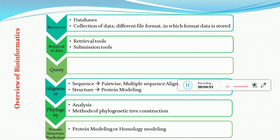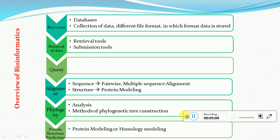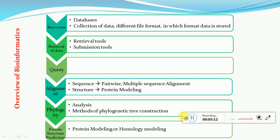Next, based on retrieval or submission, we can generate a query — a sequence on which we can apply multiple processes. For example, if we get a query in the form of a sequence, we can do alignment. Alignment is basically checking how much similarity exists between an unknown sequence and known sequences already present in databases. Sequence alignment can be done in two ways: pairwise alignment and multiple sequence alignment. Pairwise can be further divided into local and global alignment.